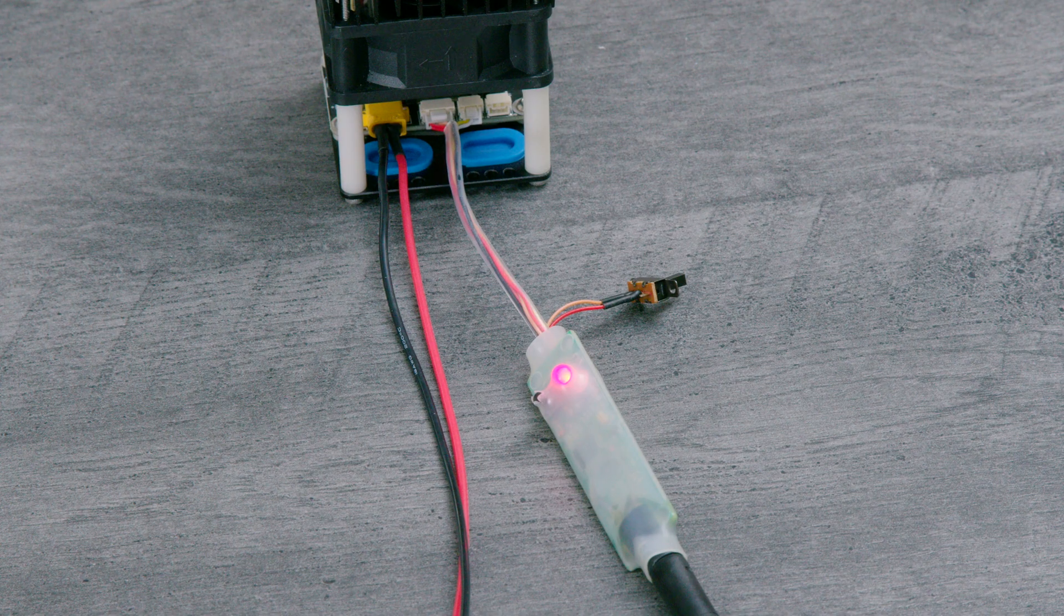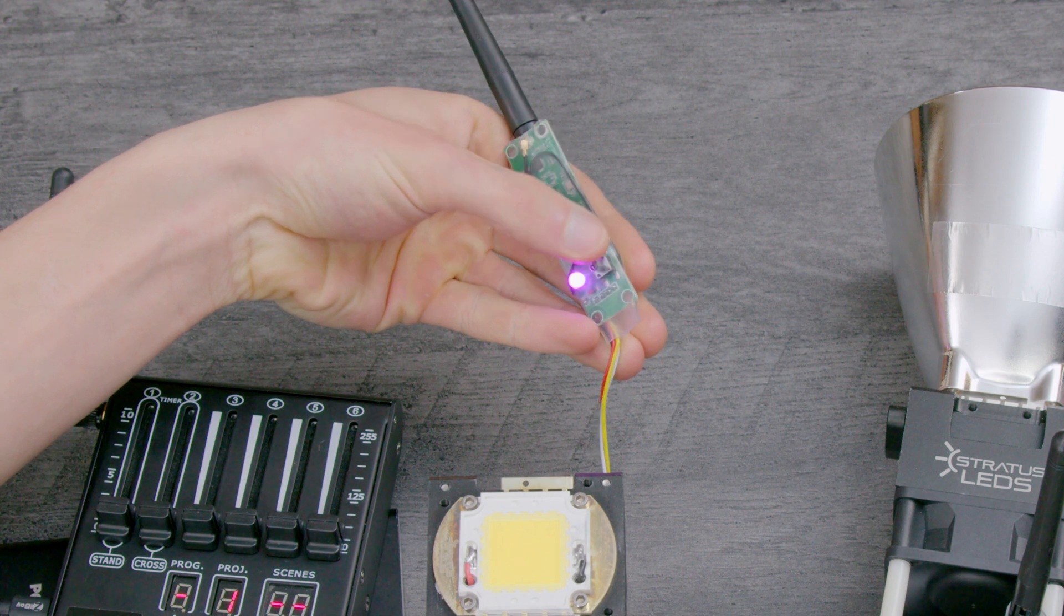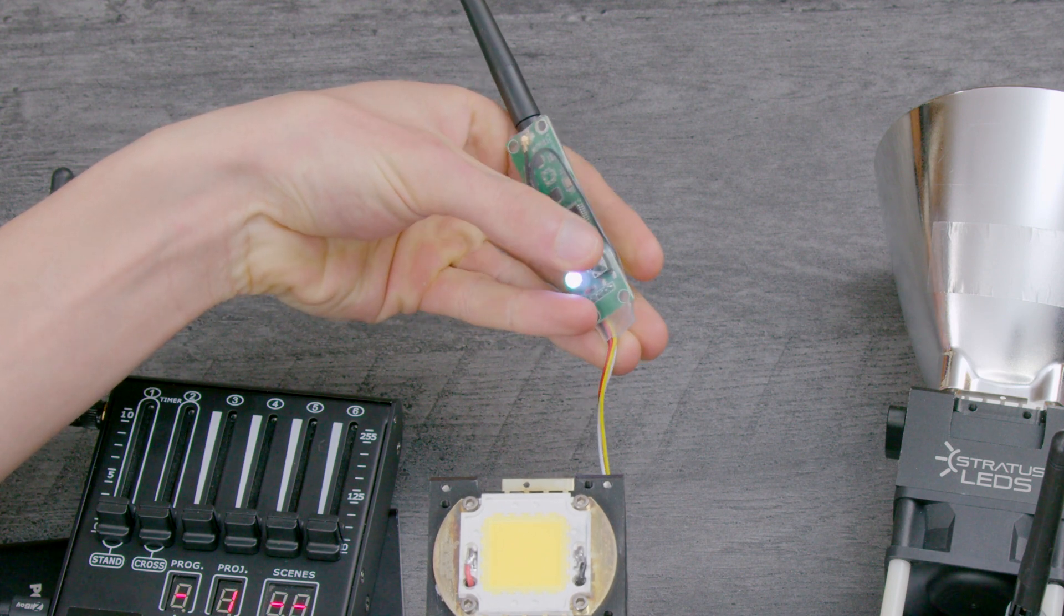When powered on, the light on the transceiver should be red. The color indicates the channel that the transceiver is on. Pressing the button will change the channel group.